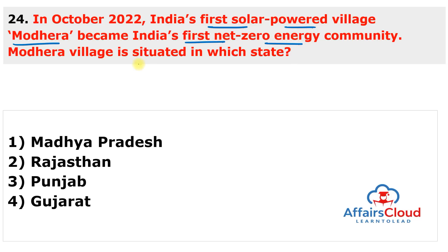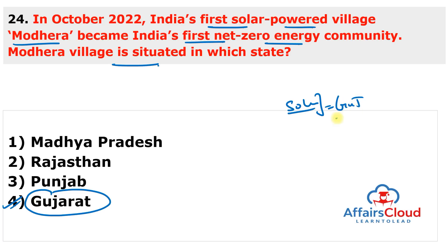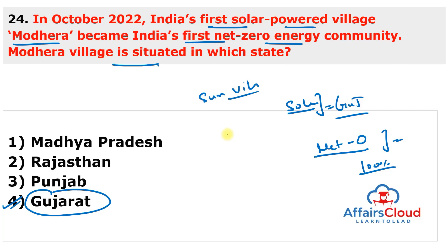Next question: India's first solar-powered village Modhera became the first net zero energy community — Modhera village is situated in which state? The answer is Gujarat. Modhera, in the Mehsana district of Gujarat, has become India's first net zero energy community by meeting 100% of its energy requirement using on-site solar power. This was achieved through Project Surya Gram (Sun Village), under which one kilowatt of solar panels was installed on the roof of every household in Modhera in two phases, making it India's first 24x7 solar-powered village.